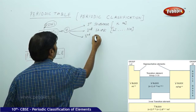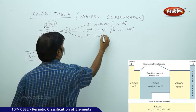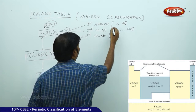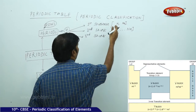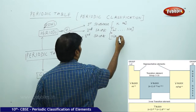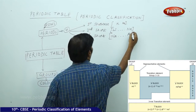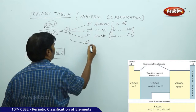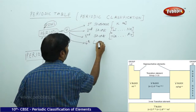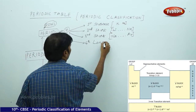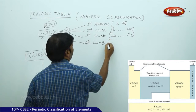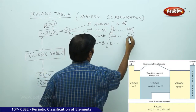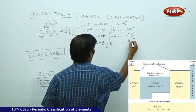The third is again a short period. It starts with sodium and ends with argon. The fourth is a long period, starting with potassium and ending with krypton.